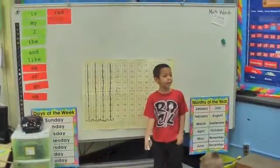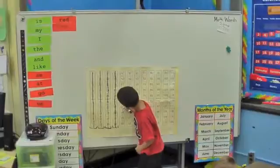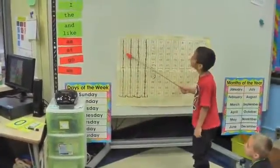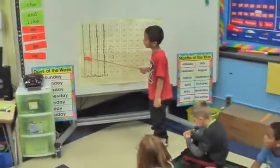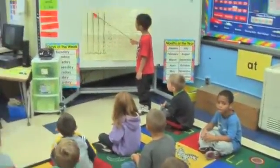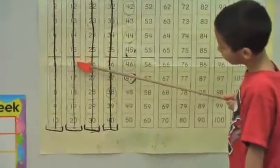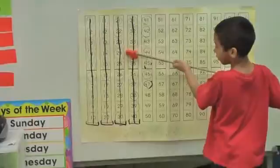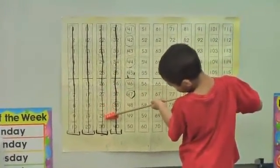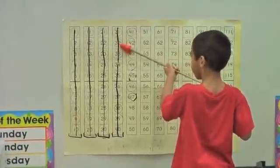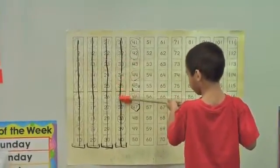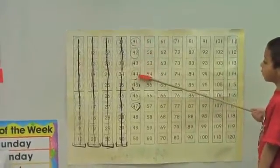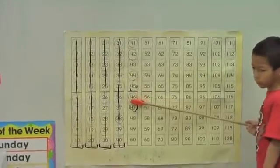We're at 46 and I'm running one today. Go with me: 1, 2, 3, 4, 5, 6, 7, 8, 9, 10, 11, 12, 13, 14, 15, 16, 17, 18, 19, 20, 21, 22, 23, 24, 25, 26, 27, 28, 29, 30, 31, 32, 33, 34, 35, 36, 37, 38, 39, 40, 41, 42, 43, 44, 45, 46, 47.